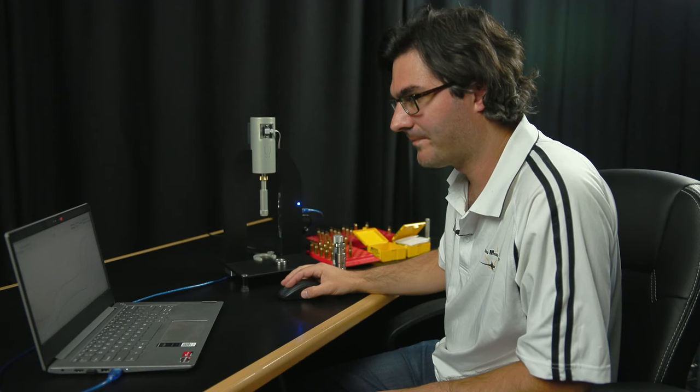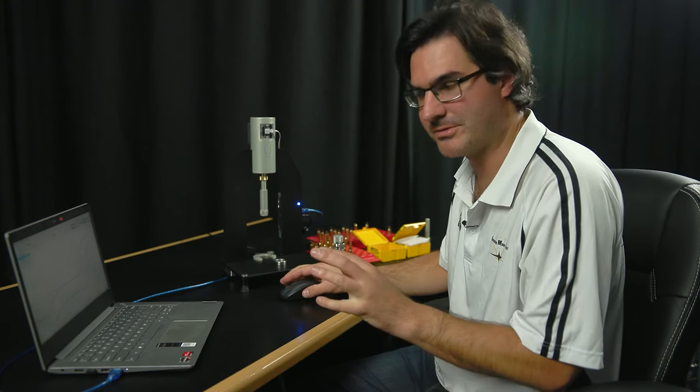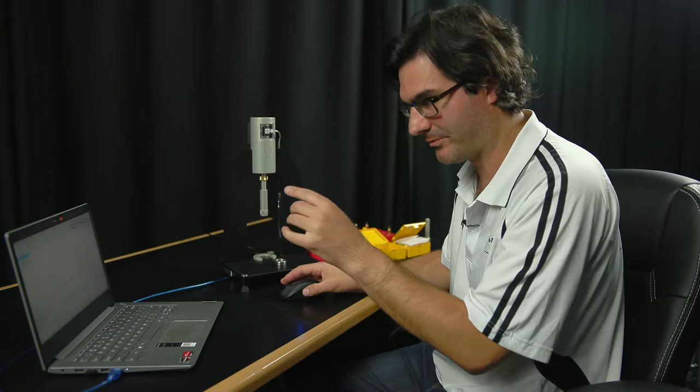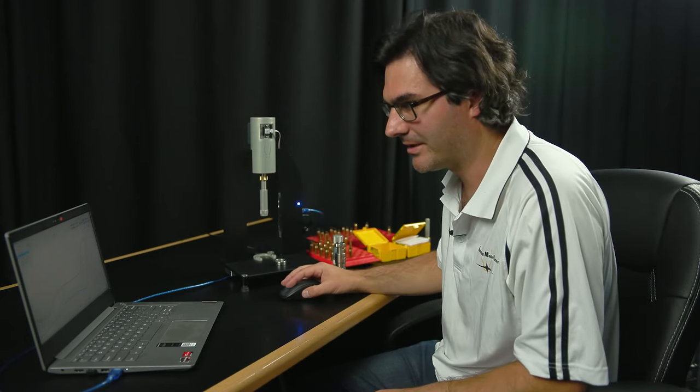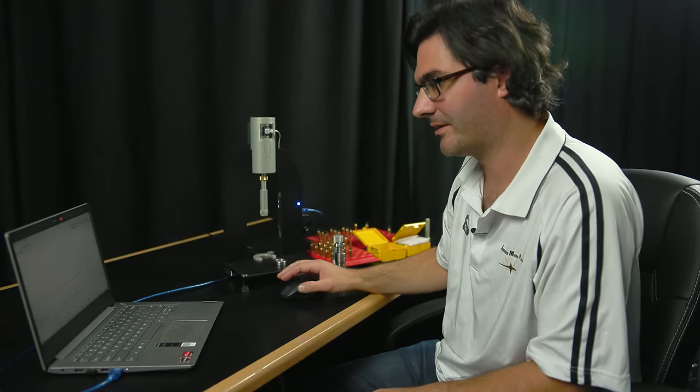We want to save that. But because we've already done a session before in this cartridge with 308, you've got something here called Compare Sessions at the top left. If I wanted to, there's the two traces I've just done.